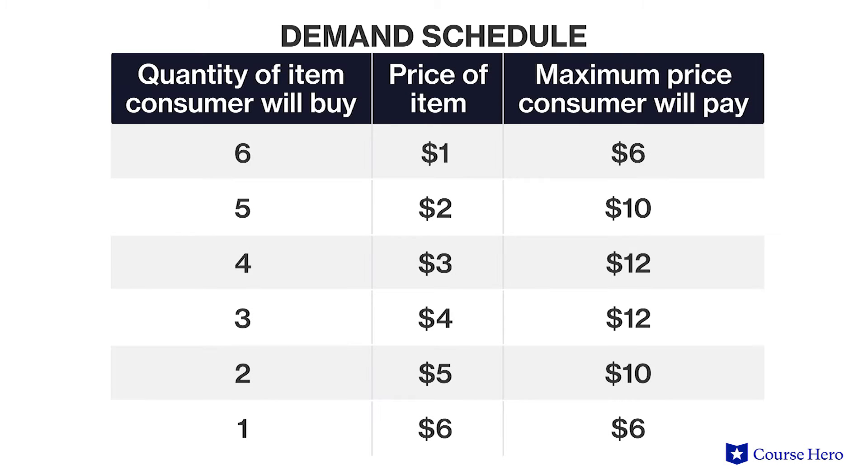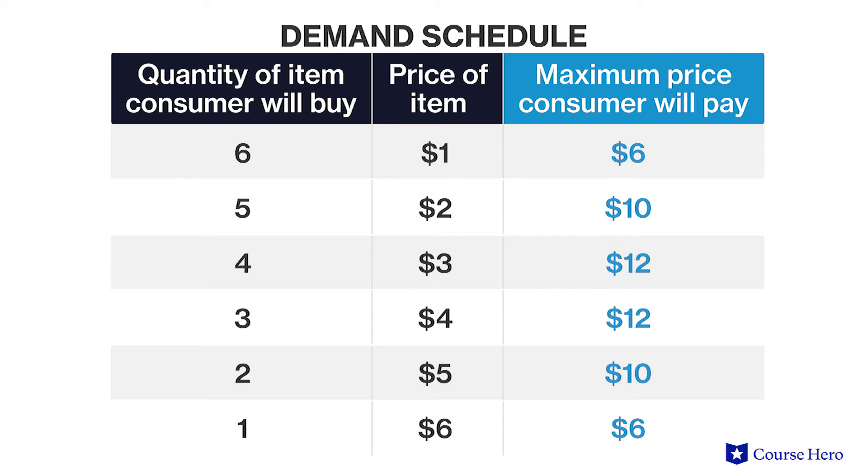A market is a group of buyers and sellers of a particular good or service. One person may buy a large quantity of an item when it's cheap, but they will buy less when the price is higher. A demand schedule is a table that shows the various quantities demanded of a good at different prices, and can also show the maximum price a consumer would be willing to pay. Different people may buy different quantities at the same price depending on their disposable income or how much they love a particular item. Taken together, all consumers interested in purchasing the same item constitute a market, and the quantities they demand at different prices constitute the market's demand.